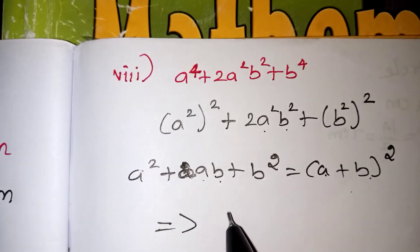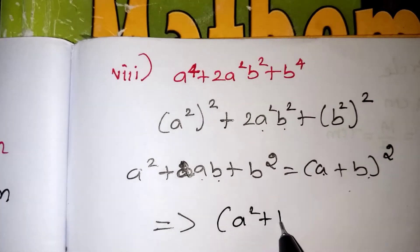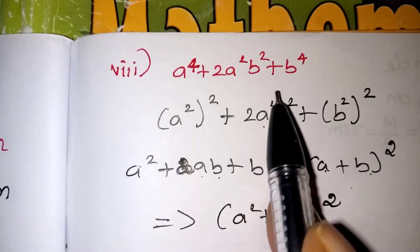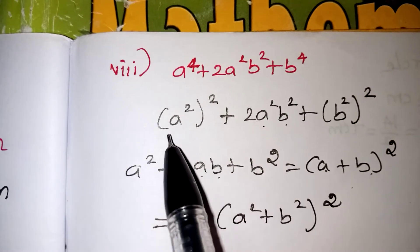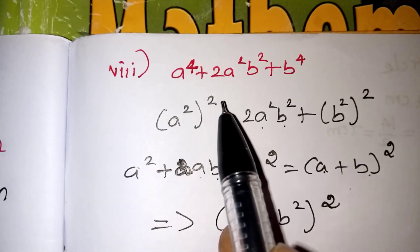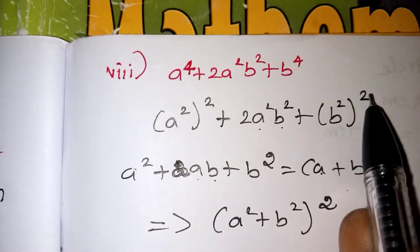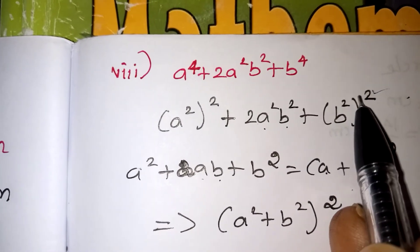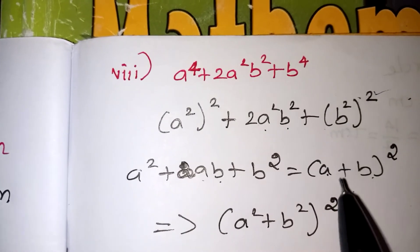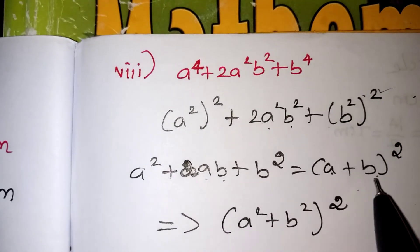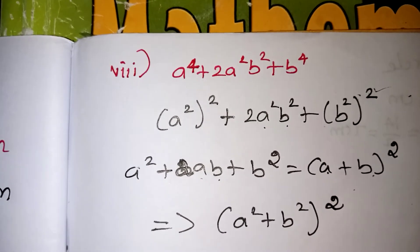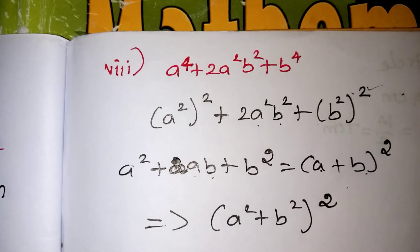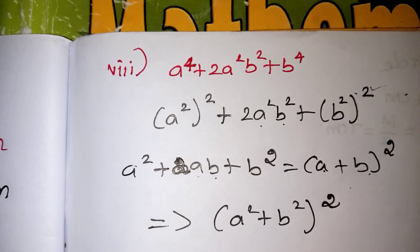So the answer is a squared plus b squared the whole squared. Because power 4 is written as a squared the whole squared, a squared is our a and b squared is our b. So a squared plus b squared the whole squared is the correct final answer. That's all students — thank you for watching; if you like our video, please subscribe to our channel for more videos.